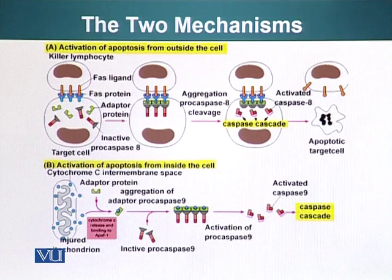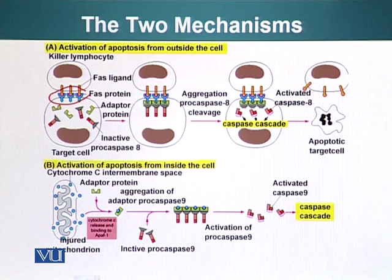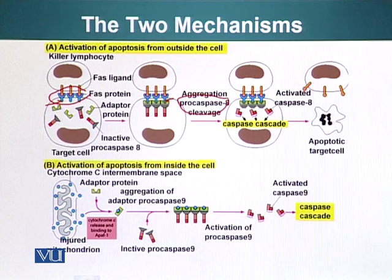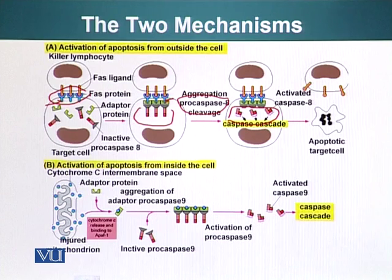There are two mechanisms for activation of caspases. The first involves a killer T lymphocyte expressing FAS ligand, which binds the FAS protein on the surface of the target cell. This binding causes a conformational change in the cytoplasmic domain of FAS protein, resulting in binding of an adapter to that domain. This adapter recruits a caspase called procaspase-8. When a group of procaspase-8 molecules accumulate, they cleave each other, resulting in active caspase-8, which can then activate other caspases in a cascade ultimately resulting in apoptosis.